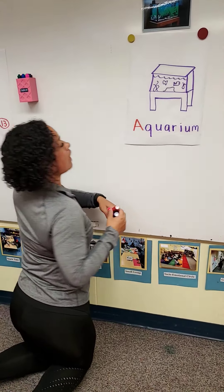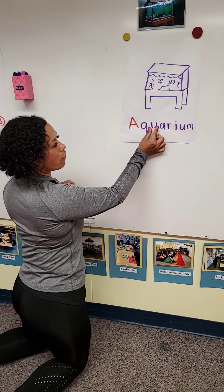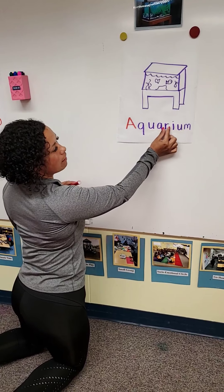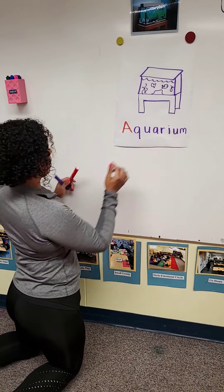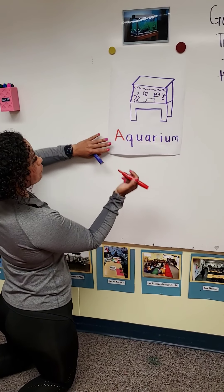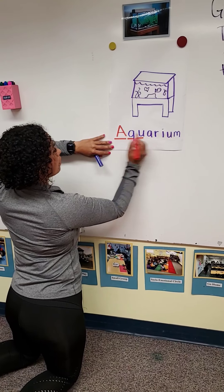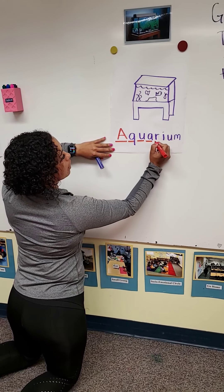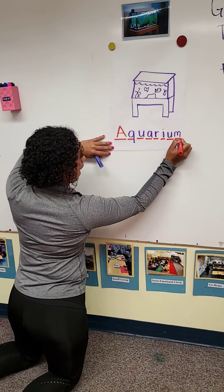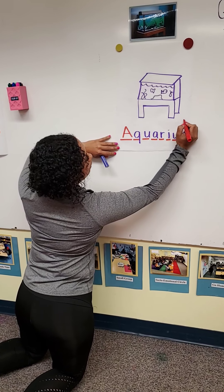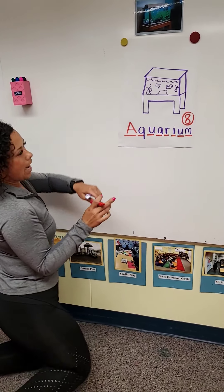Now we're going to count the letters. One, two, three, four, five, six, seven, eight. Let's count them one more time: one, two, three, four, five, six, seven, eight. Now to make the number eight, we make an S and close the gate, and that is the number eight. All right.